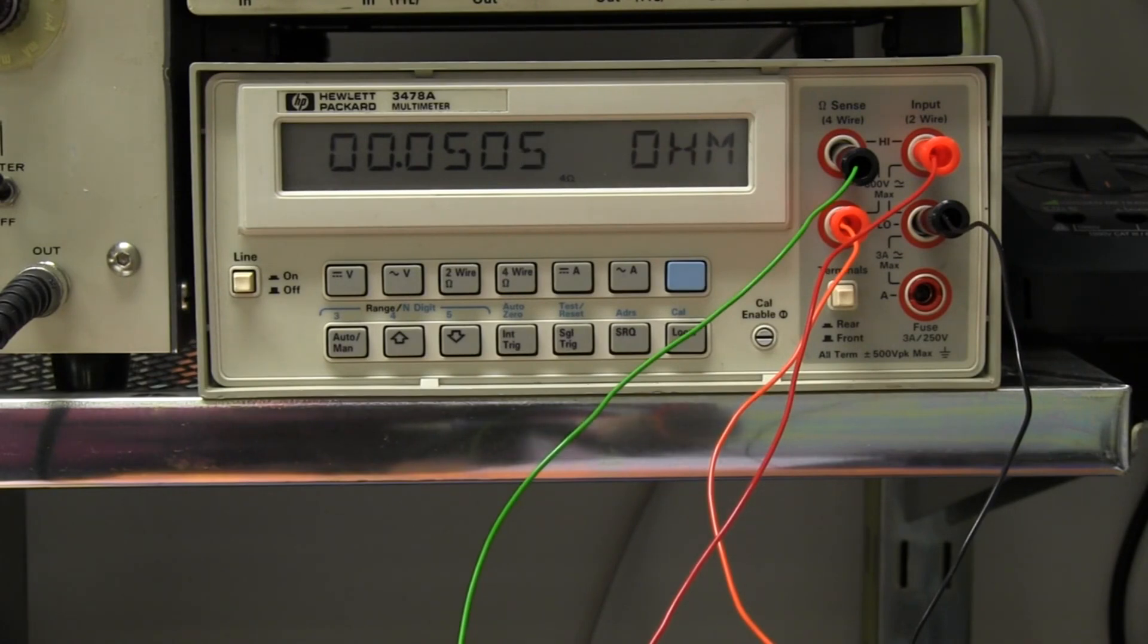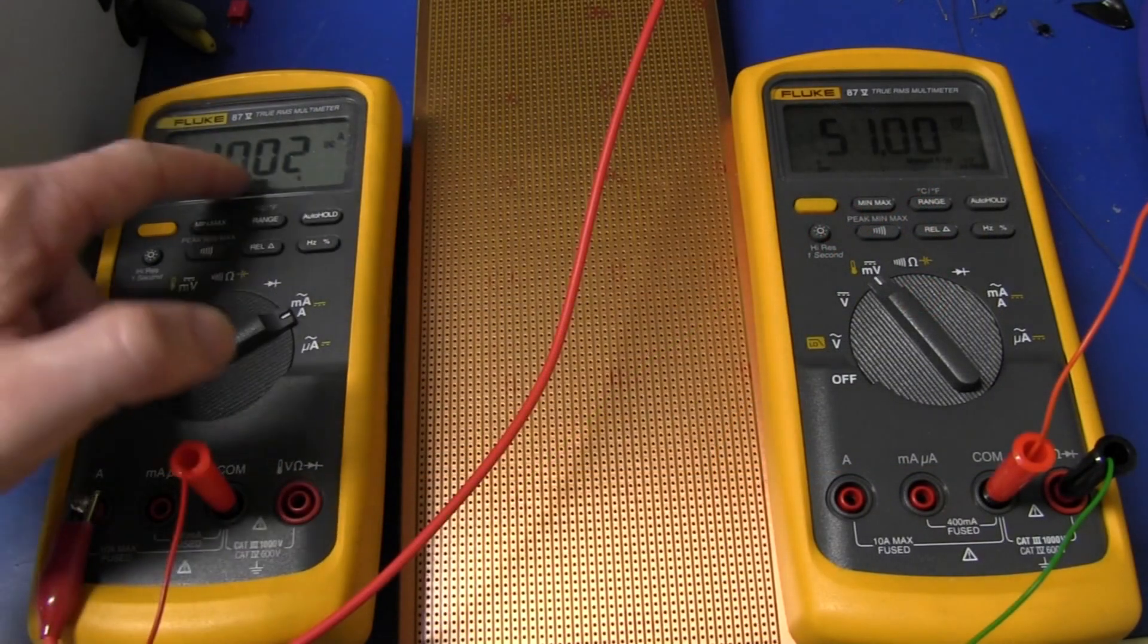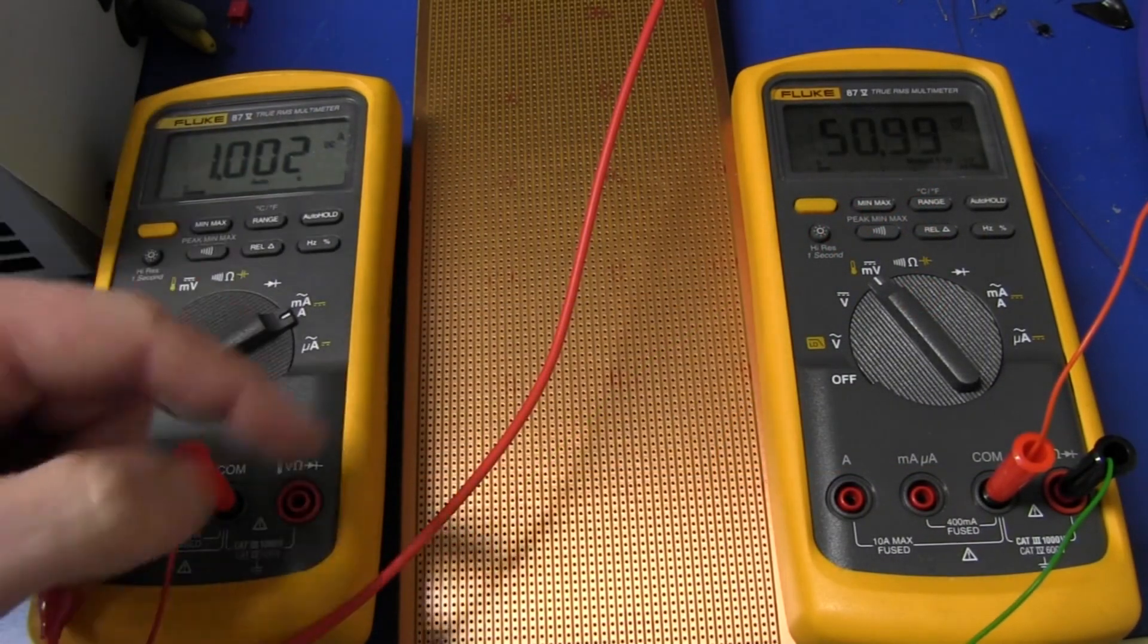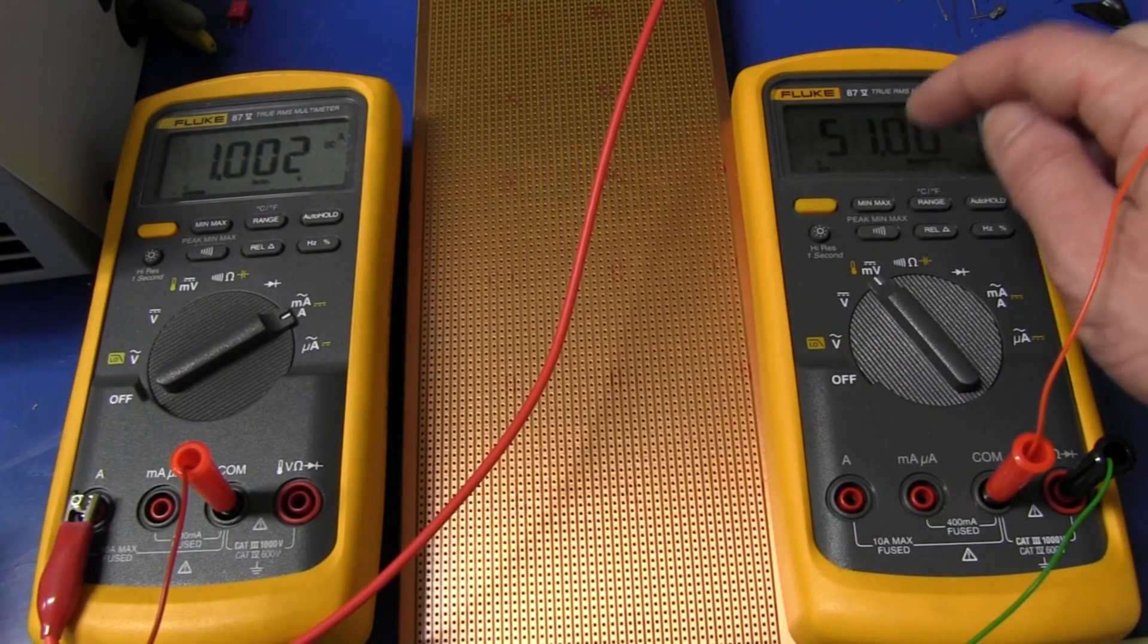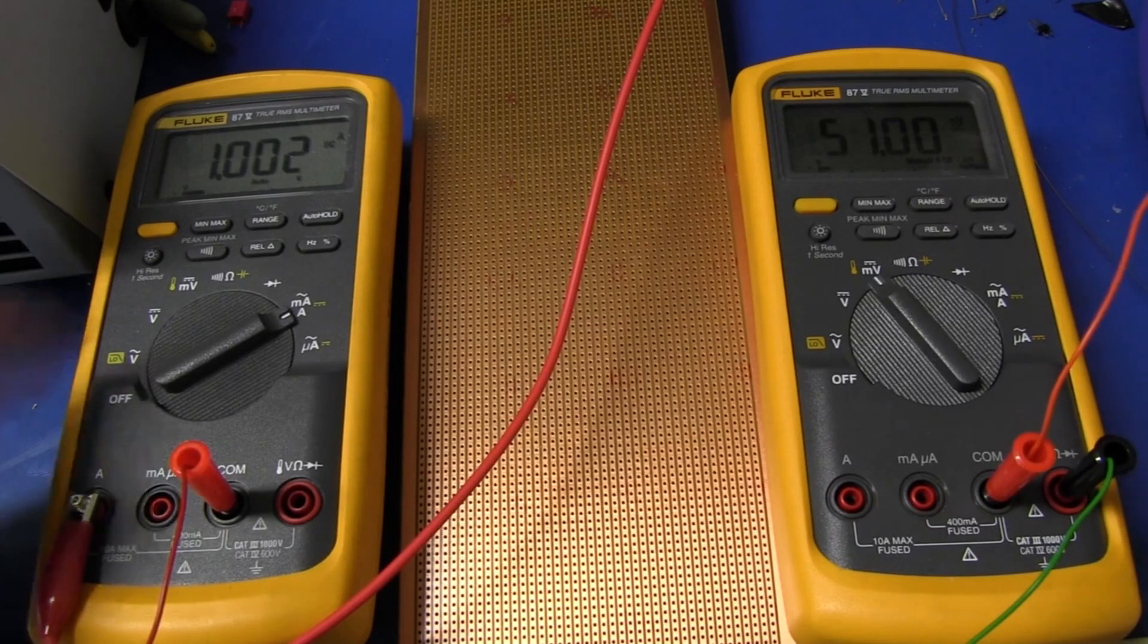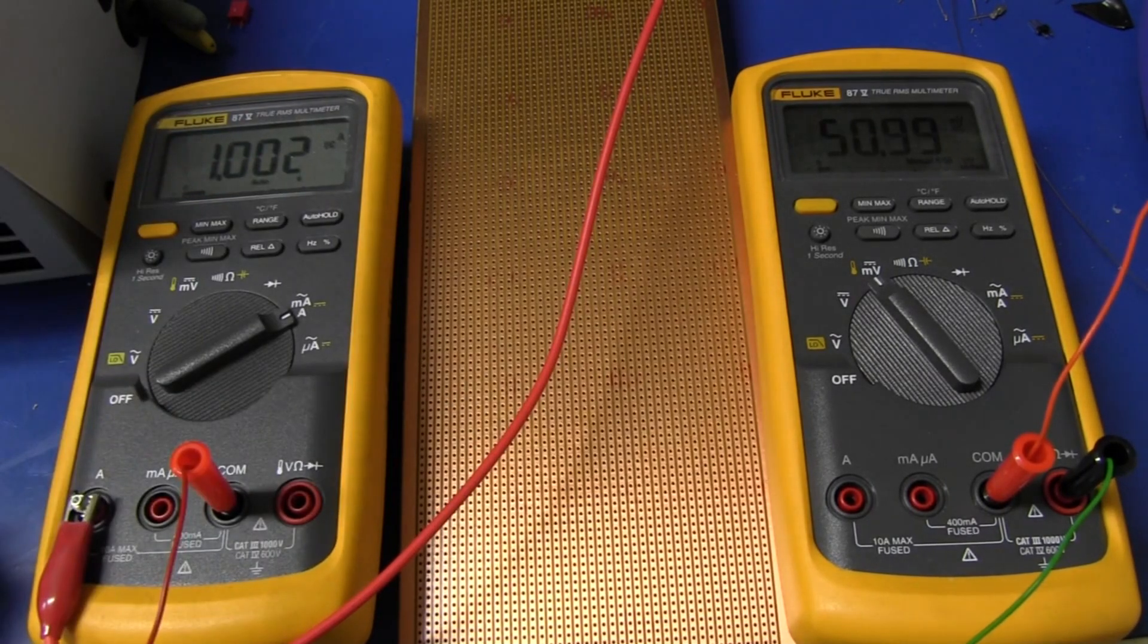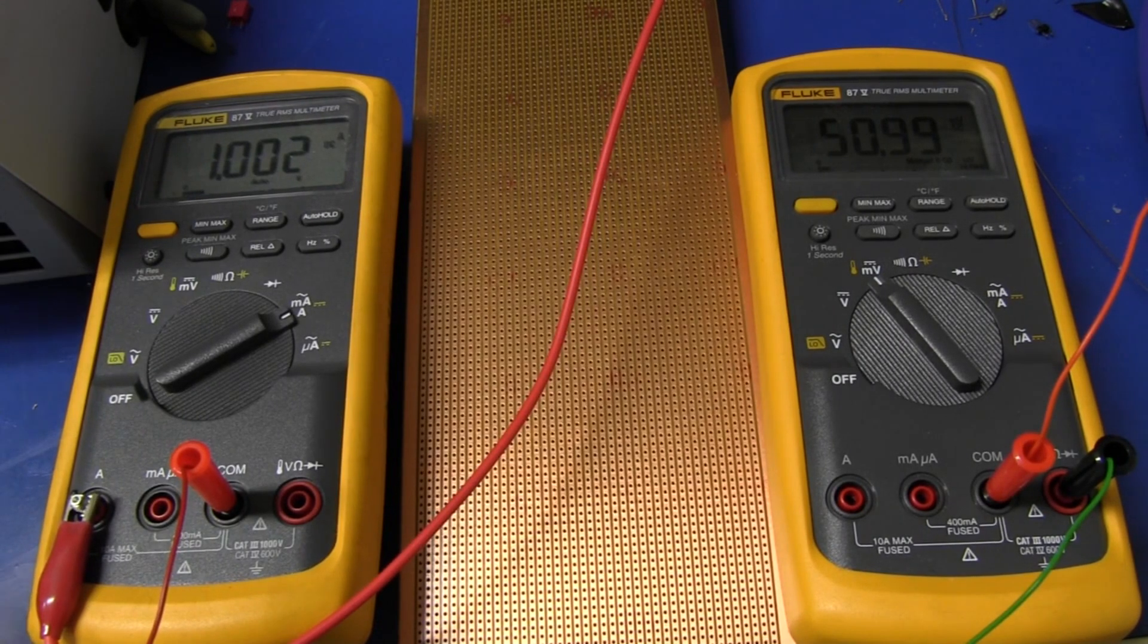And what I've got here, I'm now passing a constant current of one amp through this trace and I'm measuring the voltage drop from the sense wires. And as you can see, 51 millivolts for one amp. Use Ohm's law, that's 51 milliohms. It's spot on to our HP 3478A meter four wire terminal resistance measurements. So we've got two different measurements confirmed. This trace is definitely 51 milliohms.